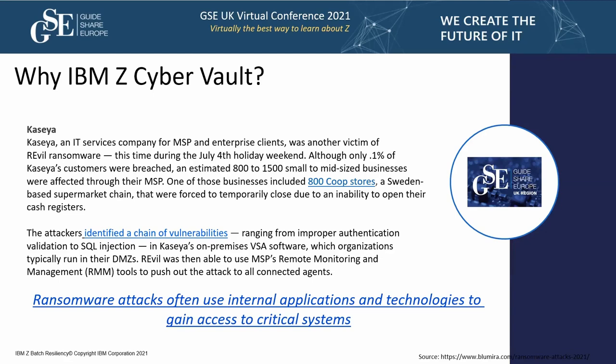There's been some success tracking down the people who performed this Kaseya attack — some money recovered and arrests made in various parts of the world. Something that came in from external, but you also need to be aware of potential ransomware attacks that might happen internally. That could be done by one person or a group of people, and those are the things we need to protect ourselves from when considering resiliency as a whole.